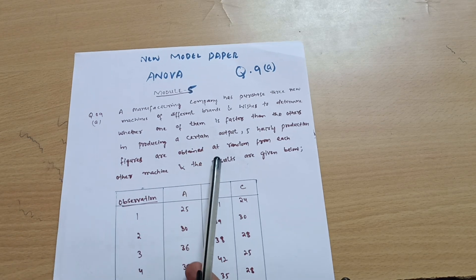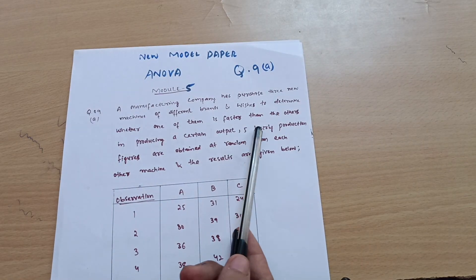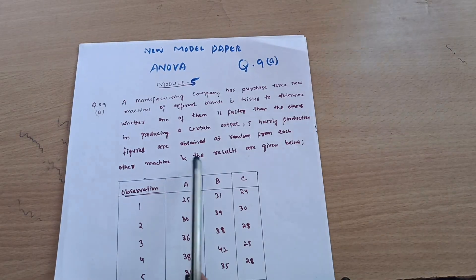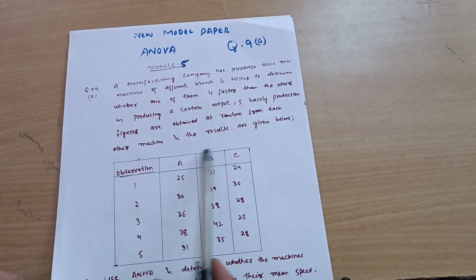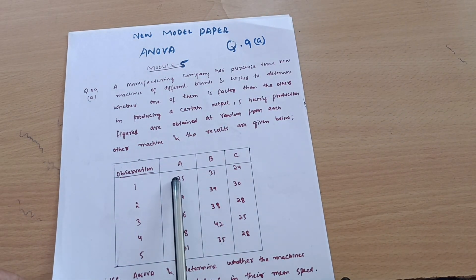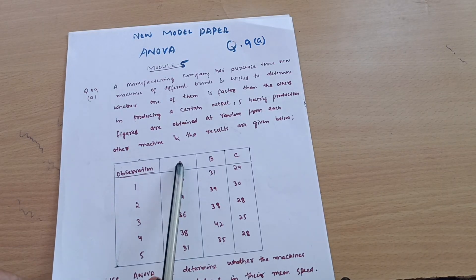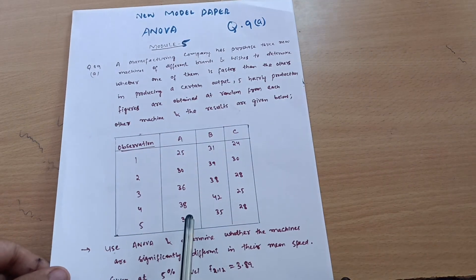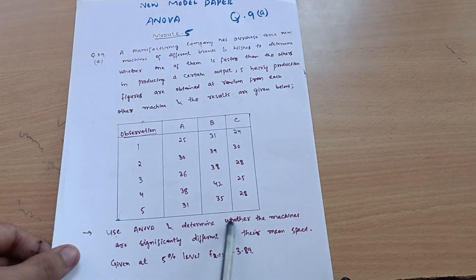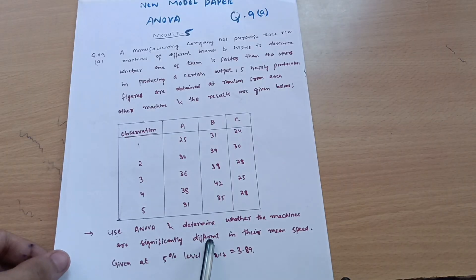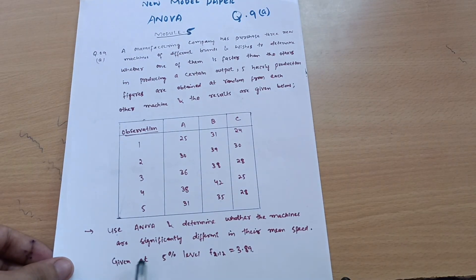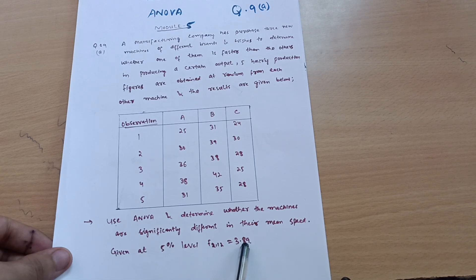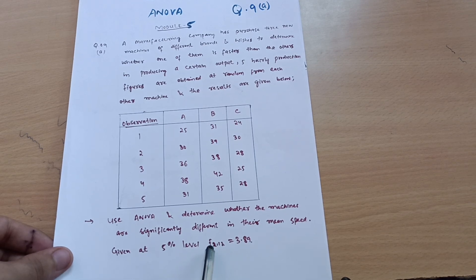Five hourly production figures are obtained at random from each machine and the results are given in the table below — values for machine A, machine B, and machine C. Use ANOVA to determine whether the machines are significantly different in their means. We are given at the five percent level: F(2, 12) = 3.89. These are the degrees of freedom.